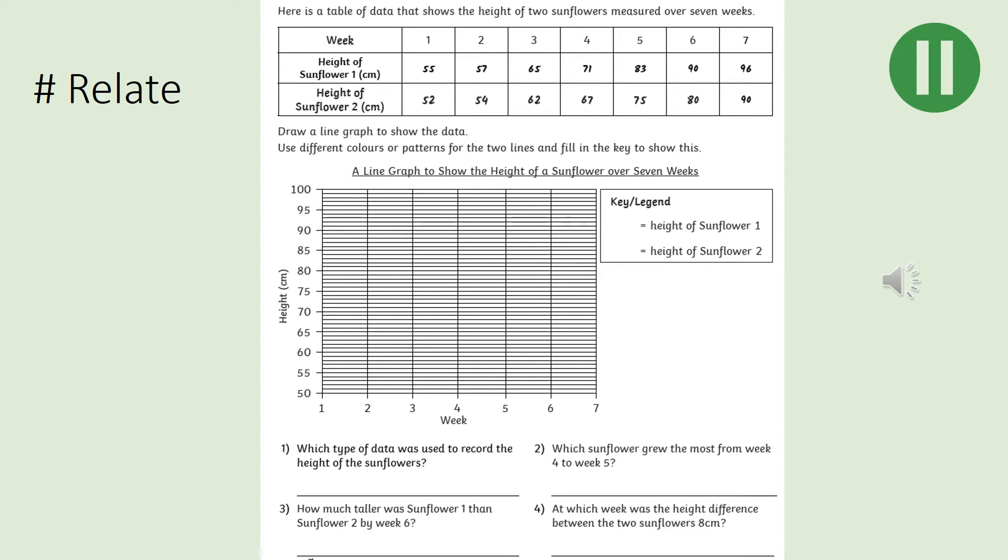For Relate, you have got two sets of data. So think about using different colours to plot each of the lines for each of the different sunflowers. Have a look at the table above, which gives you your data. You could either use the worksheet if you've printed it out, or you could have a go at drawing your own axes. Make sure you label your axes and include a title, please. Once you have finished plotting the graph, you then use your line graph to answer the questions below. Pause the video while you work.